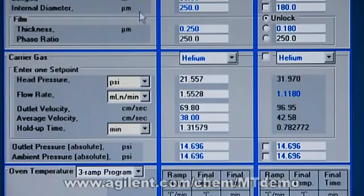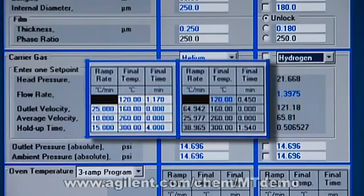So we go in here, we click Translate Only, we click on Hydrogen, we put in our methods, and now we're at under 4 minutes, what used to be a 30-minute run time.